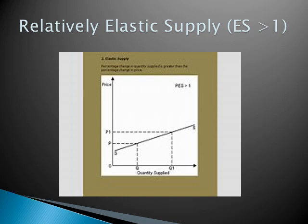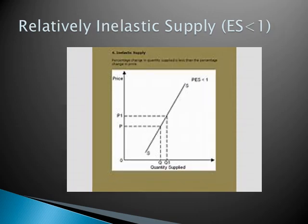Our next degree of elasticity of supply is relatively inelastic supply. Here, price is greater than the supply — in the diagram there is a narrow gap between both quantities but a broader gap between both prices. This situation arises when the quantity supplied changes by a small percentage as compared to the change in price; that means price is changing by a bigger amount but quantity supplied changes only by a small percentage.